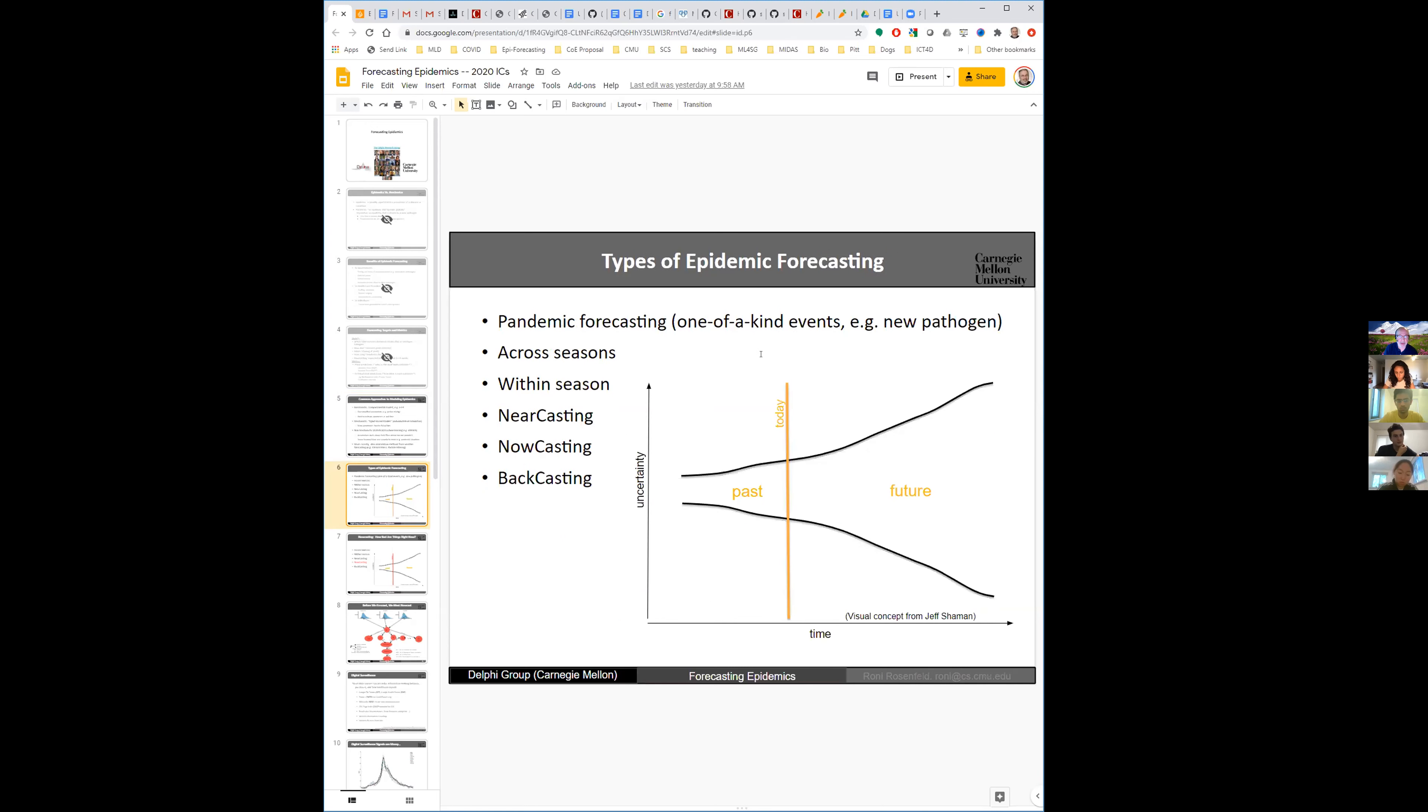Let me also point out that there are different types of epidemic forecasting. I already mentioned the fact that pandemic forecasting is very different than epidemic forecasting because you don't have much data to go on. But you can also break down epidemic forecasting into are you trying to forecast across seasons? This is a very useful thing to be able to do and nobody has done it well so far. Or you can forecast within season, which is where we have focused in our eight years. And within season, you can forecast near casting, that means just the next few weeks. Now casting, which we'll talk about in a minute, and back casting as well as forecasting the rest of the season completely, forecasting where the peak will be, how bad it will be, and so forth.